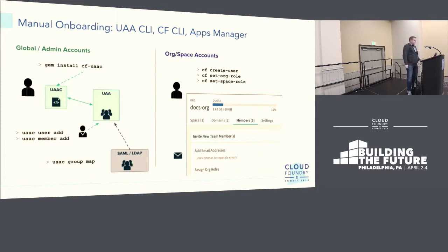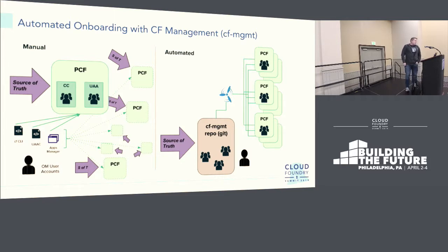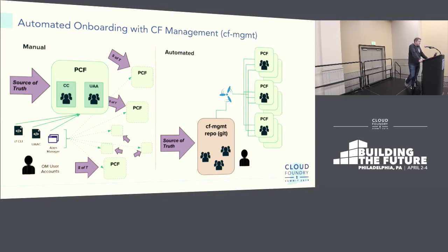Automated onboarding with CF management is really taking that manual process and codifying it — having a definitive source of truth for each of your foundations. We want a tool that is auditable, has history, and we like Git. So we use a Git repository to store your configuration. That configuration is in YAML — because everything's got to be in YAML in the Cloud Foundry ecosystem. There's a CLI for all this, but we also ship a Concourse pipeline so you can leverage Concourse to declare and apply the configuration for you.